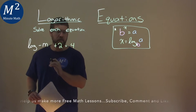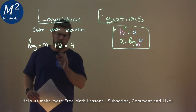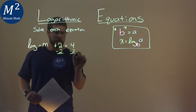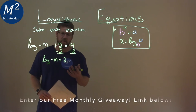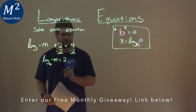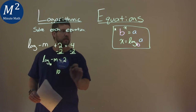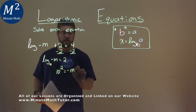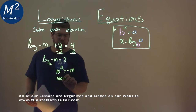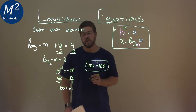We're given this problem: log of negative m plus 2 equals 4, and we have to solve it. Be careful — this is the log of just negative m, not the plus 2. So we want to get our log by itself. I subtract 2 from both sides, and I have log of negative m equals 4 minus 2, which is positive 2. This is log base 10. Using our formula, our base is 10, so 10 to the 2 equals negative m. 10 squared is 100, so 100 equals negative m. Divide both sides by negative 1, and m equals negative 100. Our final answer is m equals negative 100.